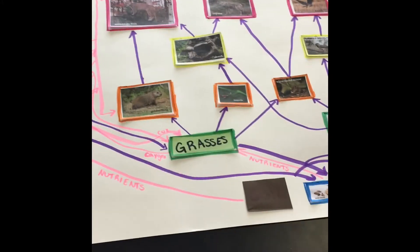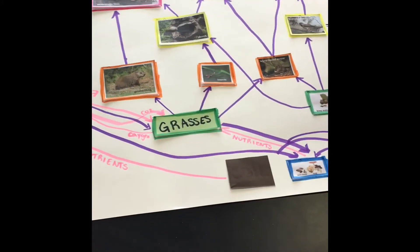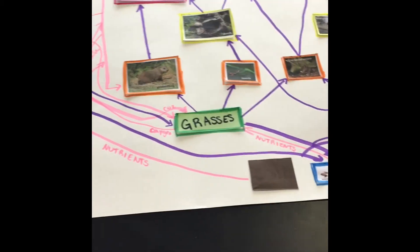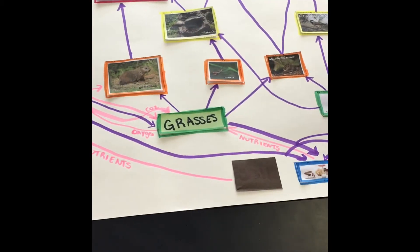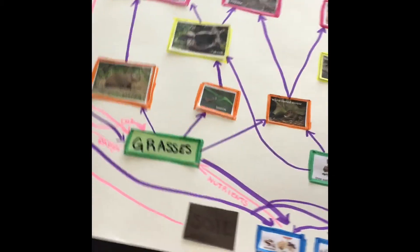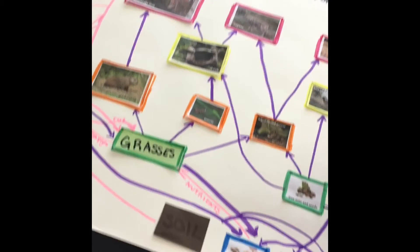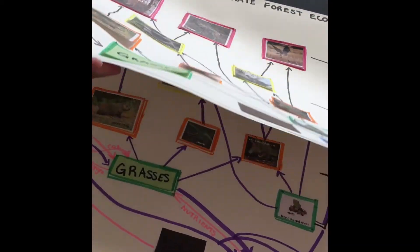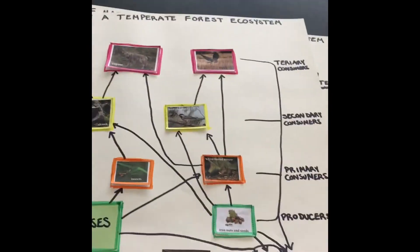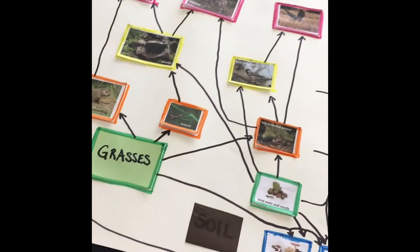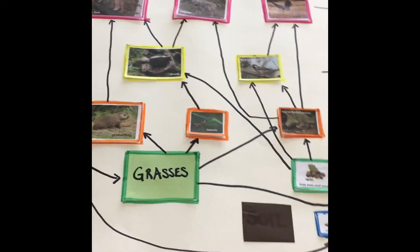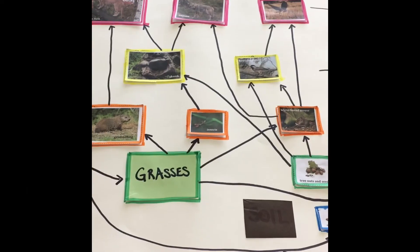Once you have your food web done, on the second poster you're going to add in all those other pieces. Then you'll be able to compare food web number two to food web number one to see how they're different. Take your time, have fun, and ask me questions if you're really, really confused. Bye, guys.